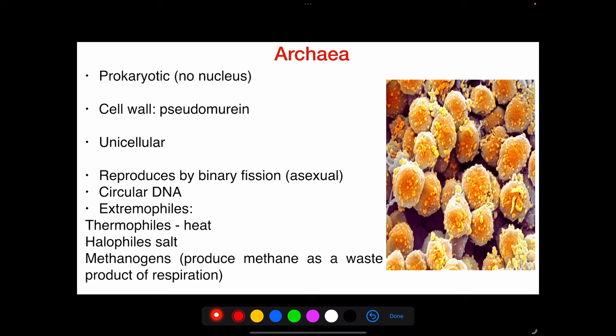Archaea are also prokaryotic — no nucleus. Their cell wall is made up of pseudomurein. They are unicellular, reproduce by binary fission, and their DNA is circular. They are extremophiles, meaning they tolerate extreme environments. For example, thermophiles withstand high heat, halophiles love salt, and methanogens produce methane as a waste product of respiration.